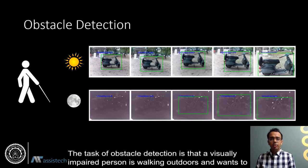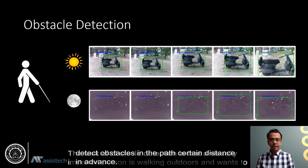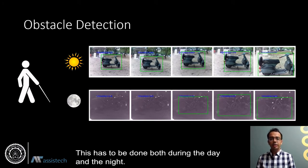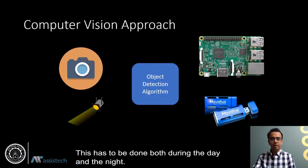The task of obstacle detection is that a visually impaired person is walking outdoors and wants to detect obstacles in the path a certain distance in advance. It has to be done both during the day and the night.